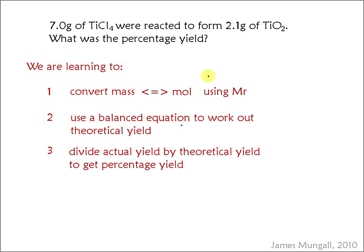The question we're going to answer is: 7 grams of TiCl4 were reacted to form 2.1 grams of TiO2. What was the percentage yield? To do this, we need to convert mass and mole using the MR, or the relative formula mass, use a balanced equation to work out the theoretical yield, and then divide actual yield by theoretical yield to get the percentage yield.